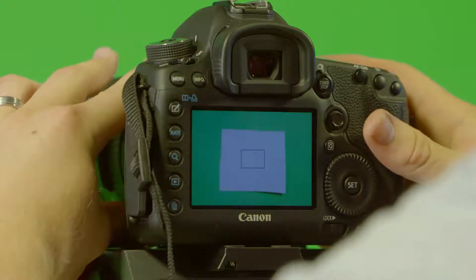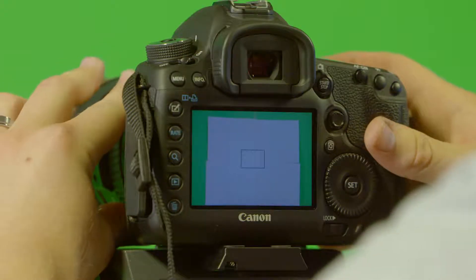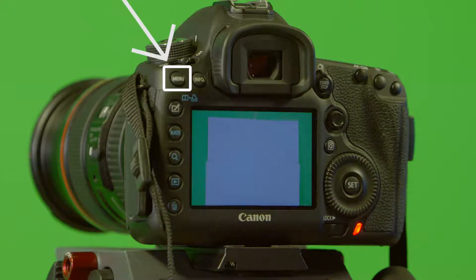After you have done this, you want to zoom in on a white object until it fills the whole screen. Next, take a photo of the white object and click the menu button on the camera.